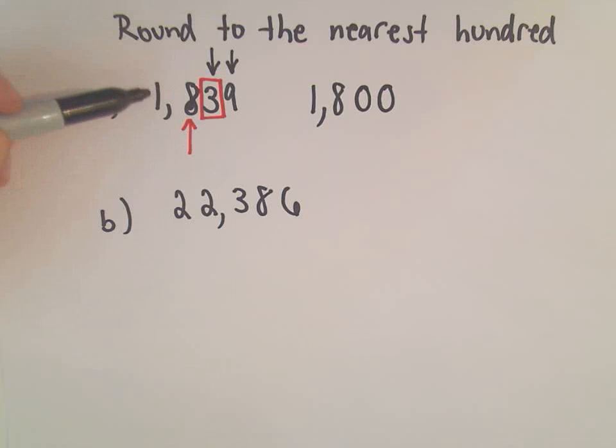So if you've got $1,839 in the bank, you've got pretty close to $1,800, a little bit over. So we've now rounded it down to $1,800.